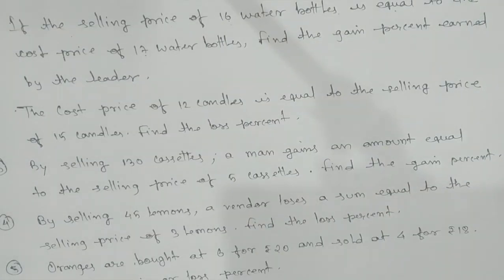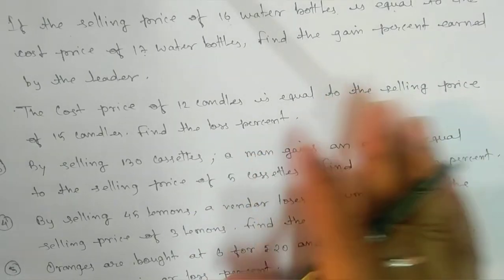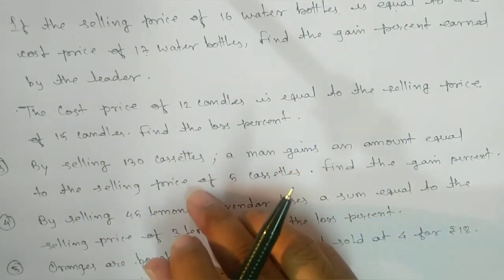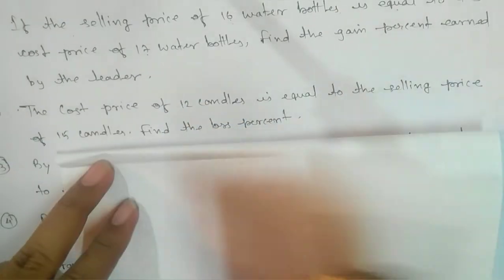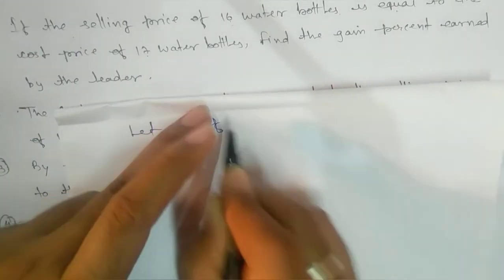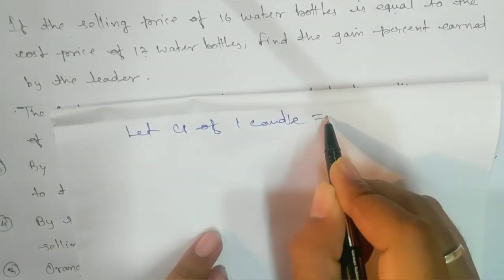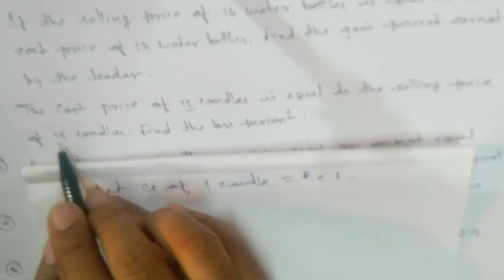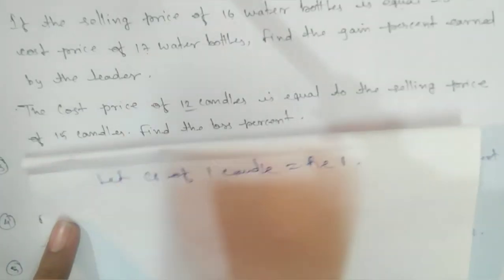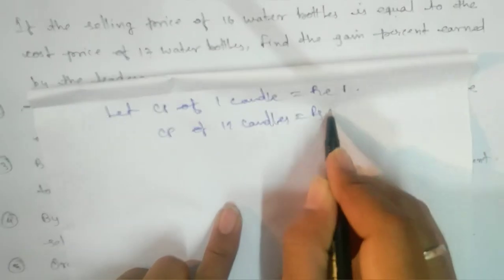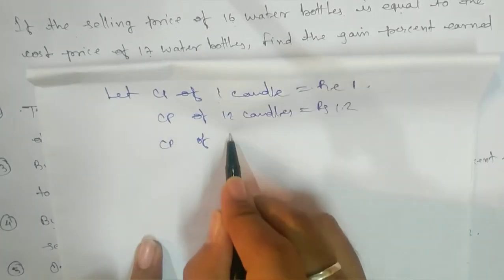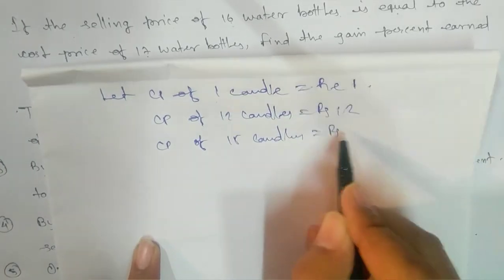The second question is quite similar to the first. The cost price of 12 candles equals the selling price of 15 candles — find the loss percent. We take CP of 1 candle = ₹1. Then CP of 12 candles = ₹12, and CP of 15 candles = ₹15.